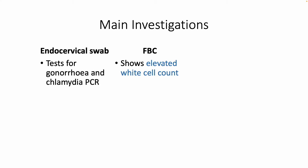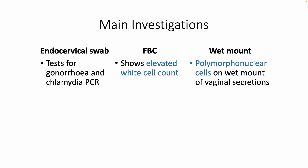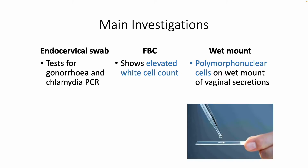Additionally, you can do a full blood count, which will show elevated white cells, which could be suggestive of the infection. For Pelvic Inflammatory Disease, you can also do something called a wet mount, where you take some of the vaginal secretions and look at them under a microscope. If you see polymorphonuclear cells, that would be very suggestive of Pelvic Inflammatory Disease.